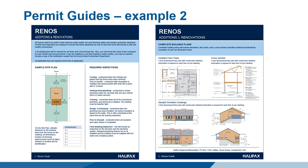This example of a permit guide for renovations contains more construction details. This type of work is more complex; therefore, the permit guide contains more details about required inspections and building plans, and shows examples of detailed floor plans, cross sections, and elevation drawings. These permit guides are intended to be an overview document, and we recommend you visit the Building and Development Permit webpages for more detailed information and requirements.